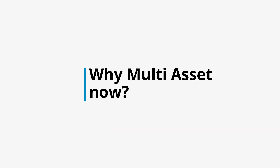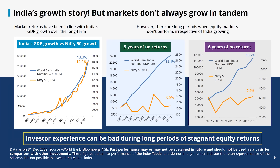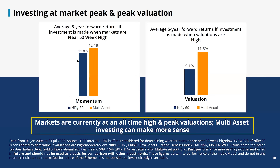Why multi-asset allocation strategy now? Markets are at 52-week highs. Economic growth and stock market returns may have mirrored each other over the long term. However, there have been periods where there is a divergence between the two. The divergence mainly happens during periods following high index levels. During such periods, equity returns have remained stagnant for a long period of time. In the past, when markets have been high on account of valuation or on account of momentum, multi-asset allocation strategies have delivered better returns.